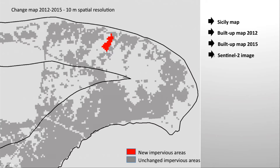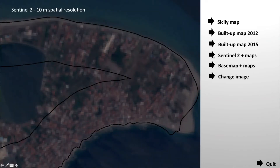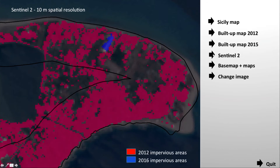Now let's analyze the changes. This is the change map obtained from the two previous layers. In red, the new impervious areas. In dark gray, the unchanged areas. We can analyze on the Sentinel-2 image the new impervious area found. The Sentinel-2 image acquired in 2015 is shown. It is possible to note the changed area. Now, the two very high resolution impervious maps are displayed on top of the Sentinel-2 image for a better comprehension of the changed area.